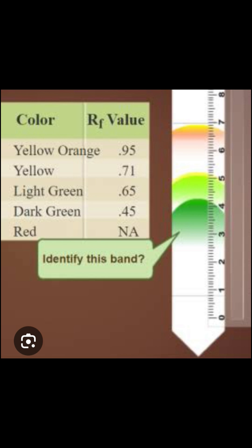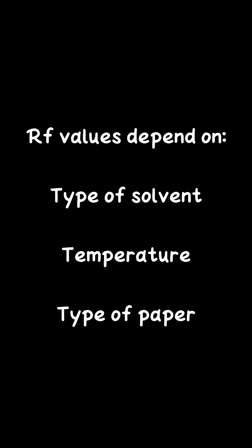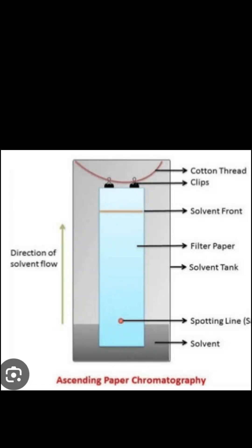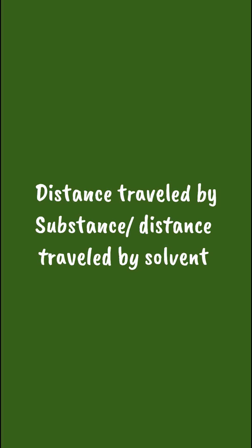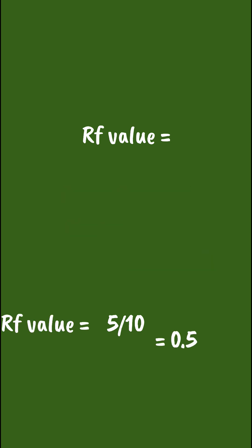The RF value is dimensionless — it has no unit — and typically ranges from 0 to 1. For example, if the solute travels 5 centimeters and the solvent travels 10 centimeters, then the RF value is 5 divided by 10, which equals 0.5. Factors affecting the RF value include solvent polarity, solute polarity, the stationary phase, and temperature.